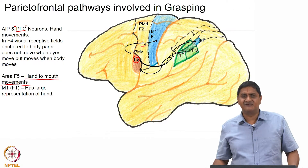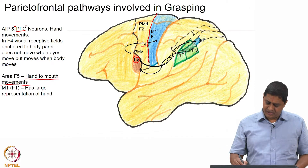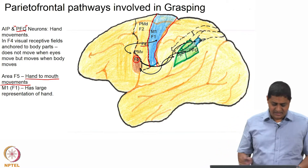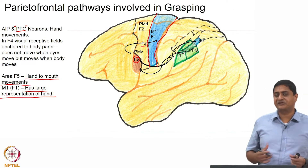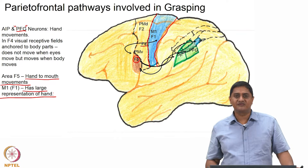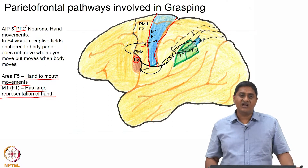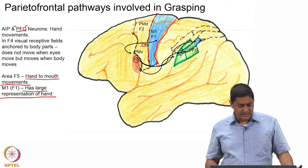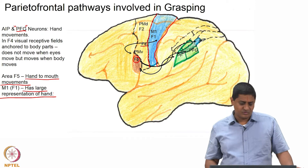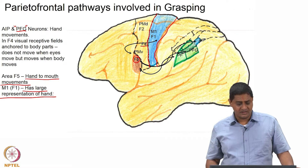There are special neurons dedicated for hand-to-mouth movements. It is also well known — we have had several discussions about how the primary motor cortex, the area just rostral to the central sulcus, has a disproportionately large representation of the hand, with a large number of neurons controlling hand function. We also saw the importance of corticomotor neurons that provide monosynaptic projections to alpha motor neurons controlling finger function. M1 has a large representation of hand and area F5 has specific neurons dedicated for hand-to-mouth movements.